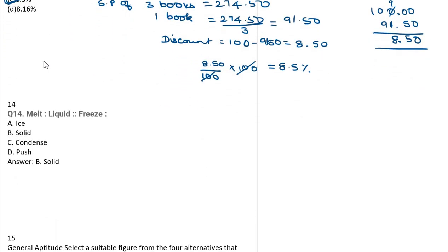Question 14 is a verbal question. Melt: if something melts, it is in the form of liquid. What about freeze? If a thing freezes, we get the solid shape. So the answer is solid shape.